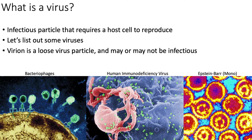HIV is a common one. Epstein-Barr gets talked about all the time. Virions are just what we call virus particles that may or may not be infectious, because it's hard to tell just looking at a virus particle — so we just say there's a bunch of virions floating around in your bloodstream. Now we organize viruses a few different ways.